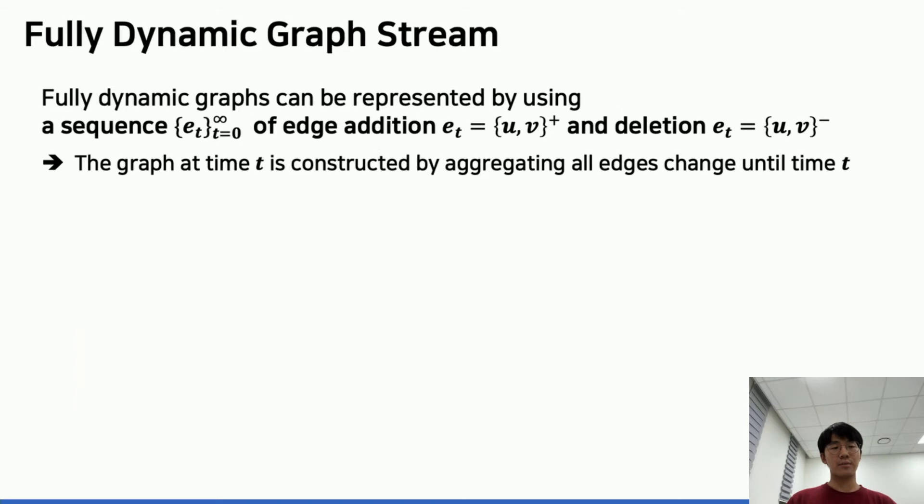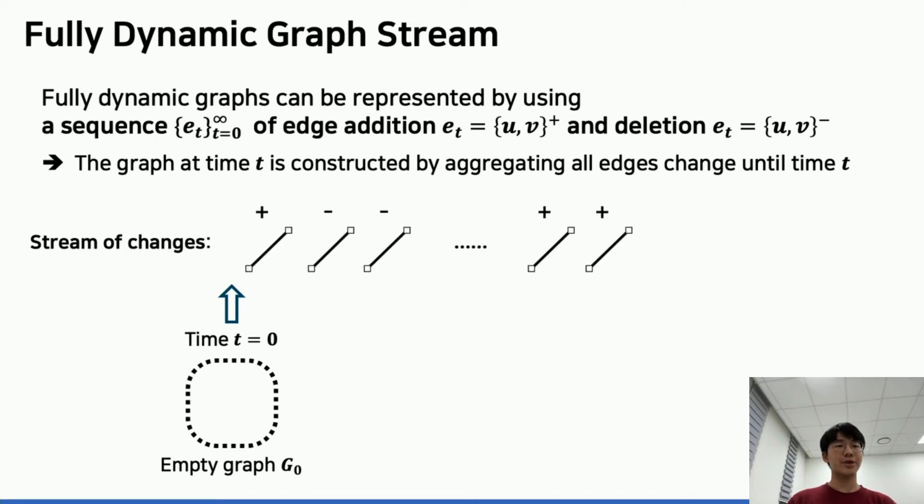Before we formulate our problem, we need a concept to address fully dynamic graphs. In this work, we formulate it as a sequence of edge additions and deletions, where the endpoints of new edges may be unseen until now. The dynamic graph at time t is given by collecting edge changes until time t. As long as changes arrive, dynamic graphs keep evolving over time.